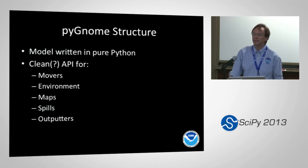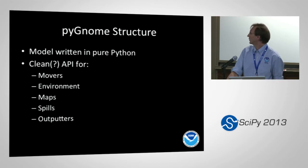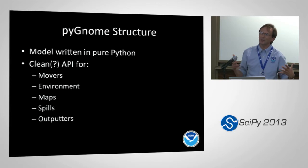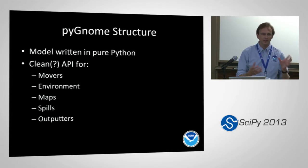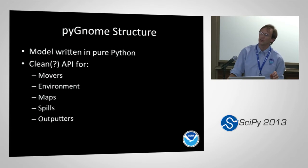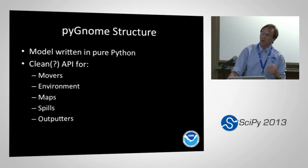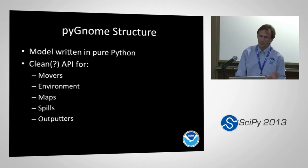The core structure is that the model itself is written in Python, and we're trying to provide a clean API to the components I talked about: movers, maps, spills, and outputters — different ways to output data. We're also separating out environment variables. A wind time series is considered an environment variable so different movers can share the same wind series. We use wind to push things floating on the surface directly, and also to drive wind-driven currents in a shallow estuary — and we want those tied to the same wind.